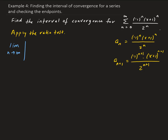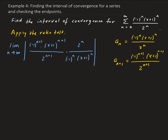So let's go ahead and apply those. We're going to have (-1)^(n+1) times (x+1)^(n+1) divided by 2^(n+1), times the reciprocal of the nth term — so that gives us 2^n on top and (-1)^n times (x+1)^n in the denominator.